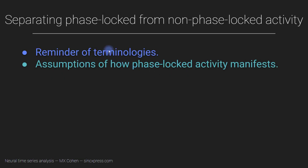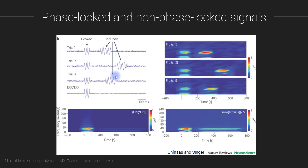I have already introduced the concept of phase-locked and non-phase-locked activity. In this video I'm going to show you what our assumptions are about phase-locked and non-phase-locked, how those activities manifest — those features of the signal — and that will lead to an operationalization of how to separate empirically the phase-locked from the non-phase-locked components of the signal. I introduced this concept way back in the beginning of this course, in the introduction section, in a video titled something like 'Origin, Significance, and Interpretation of EEG.' So if you have no idea what you're looking at, you might want to go back and consult that video.